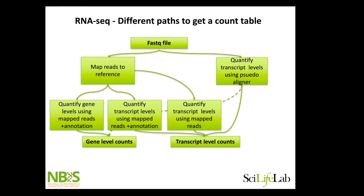First, a bit about how we go from the fastq file output we get from the sequencer. The more classical way is to have a reference genome, map our reads to it, then use an annotation file that tells us where the genes are. We count how many reads we have on each gene and get a matrix with gene-level counts per cell.